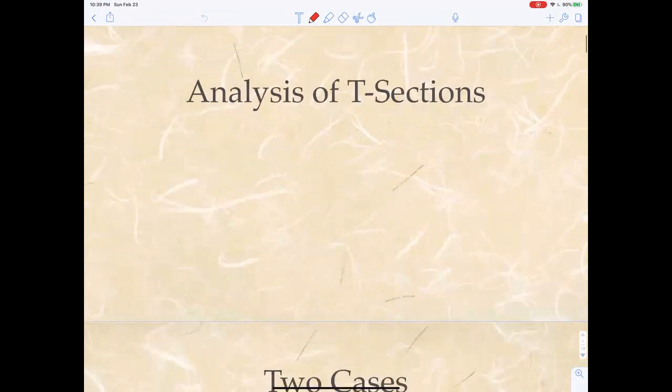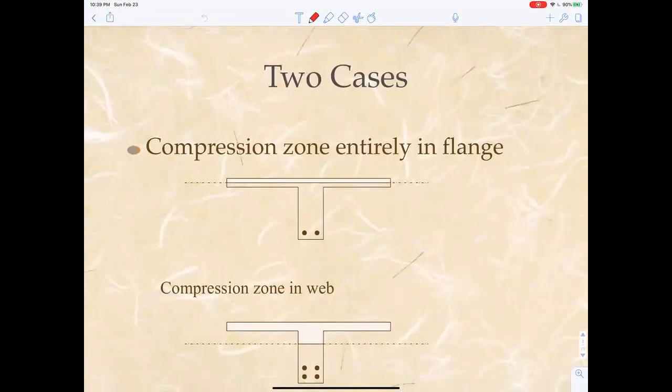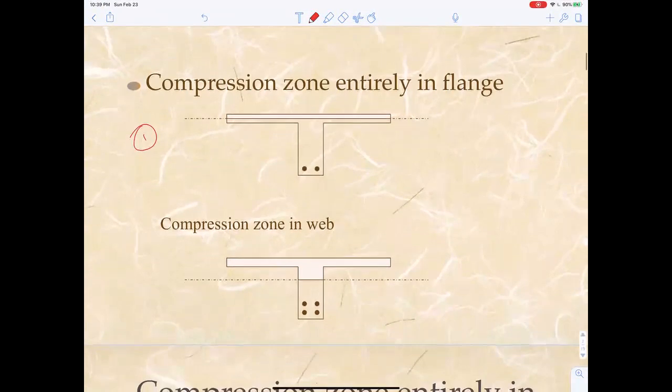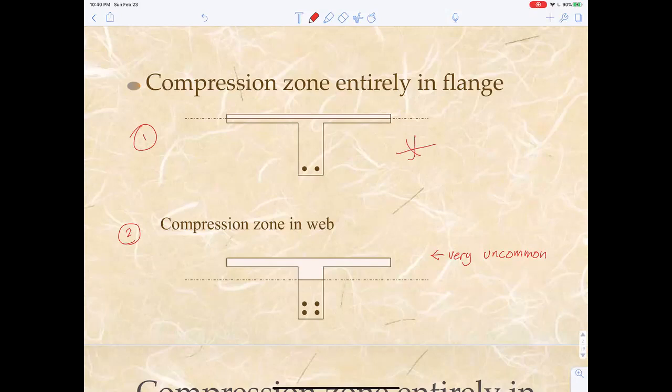When you talk about analyzing T-sections, there are two cases: where the compression zone is entirely in the flange and when the compression zone is in the web. This is very uncommon to be into the web, but we'll cover it anyway. This first video, we'll talk about where the compression zone is entirely in the flange.